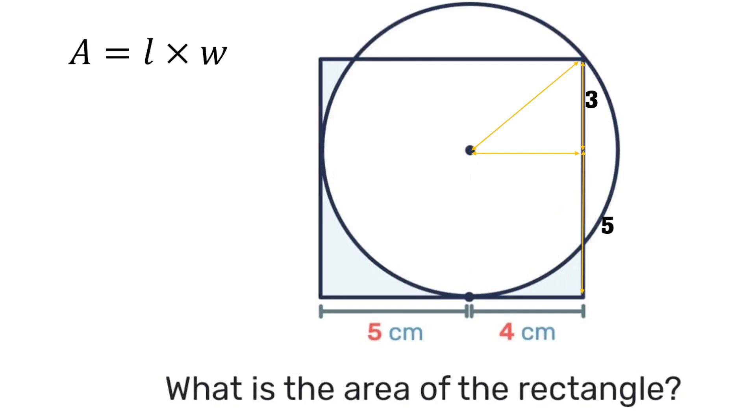The area of a rectangle is length times width. So the width will be 5 plus 3, which is 8, and the length will be 5 plus 4, which is 9. 9 times 8 gives us an answer of 72 square centimeters.